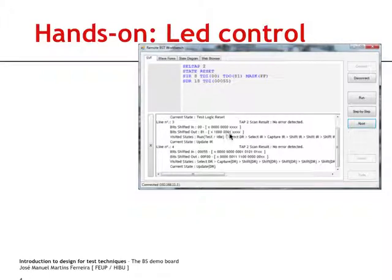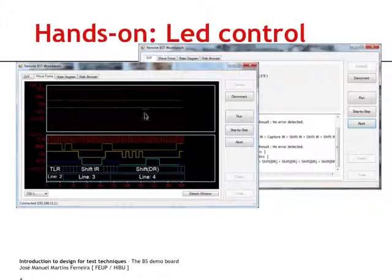If we look at the waveforms tab, then we will see the waveforms at the corresponding test access port pins. Test access port number one is empty, let's say, because all the action is taking place in test access port number two.